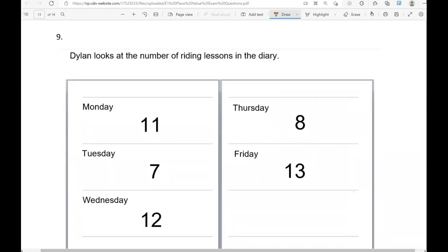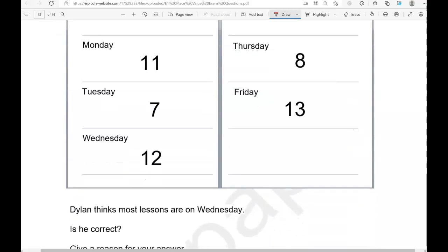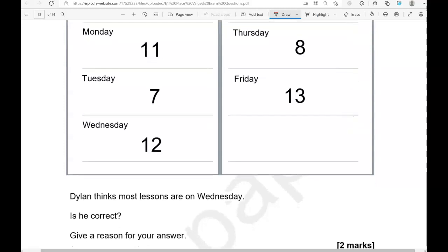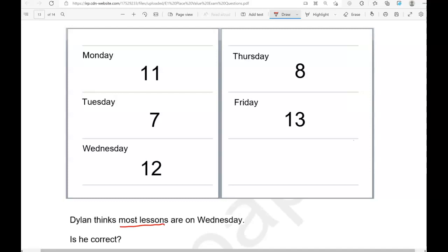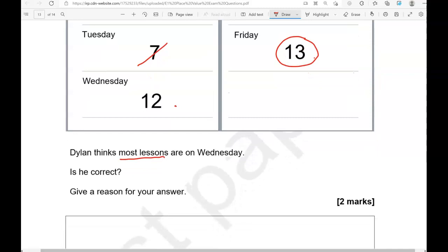Dylan looks at the number of writing lessons in the diary. Monday 11, Tuesday 7, Wednesday 12, Thursday 8, Friday 13. Dylan thinks most lessons are on Wednesday. Is he correct? Give a reason for your answer. So most lessons, that means we're looking for the highest number. Looking at 11, 7, 12, 8, and 13. 8 and 7 are below 10. 11, 12, and 13 are above 10. But when you count, you go 10, 11, 12, and then 13. So 13 is the last one, it is the highest number. So that is on Friday, not on Wednesday. So is Dylan correct? We're going to say no. Most lessons are on Friday.